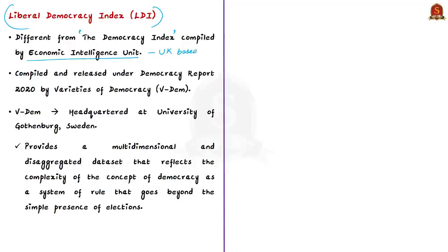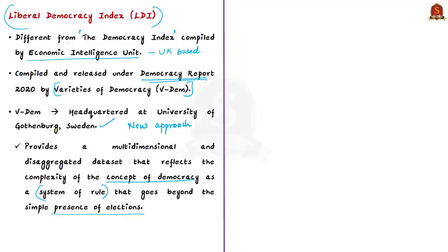This Liberal Democracy Index is compiled and released under the Democracy Report by Varieties of Democracy, in short known as VDEM. It is headquartered at the University of Gothenburg in Sweden. VDEM is a new approach to conceptualizing and measuring democracy. It provides a multidimensional and disaggregated dataset that reflects the complexity of the concept of democracy, seeing democracy as a system of rule that goes beyond the simple presence of elections.